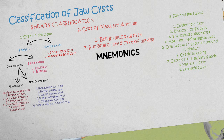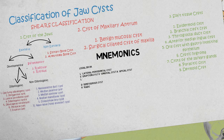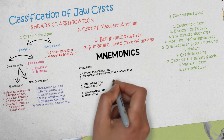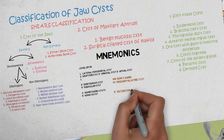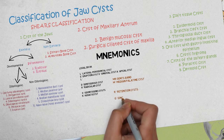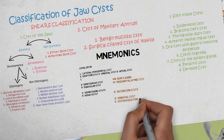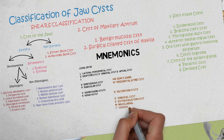A mnemonic is also shared to help remember the cysts of the jaws. You can use the acronym 'Legal Doctor' and 'Mr. Gent's Band,' which will allow you to remember most of the major classifications of cysts of the jaw and head and neck region.